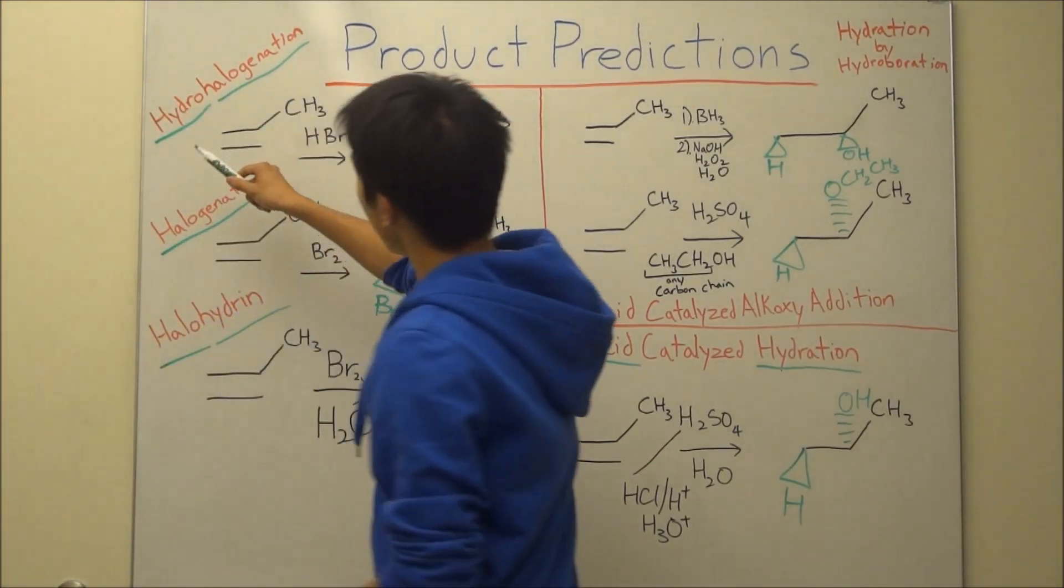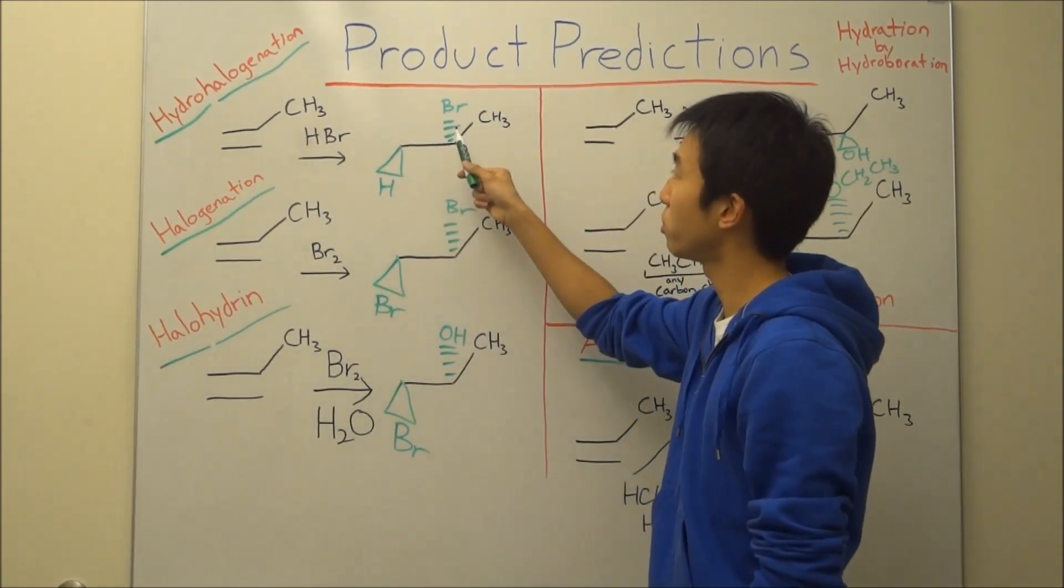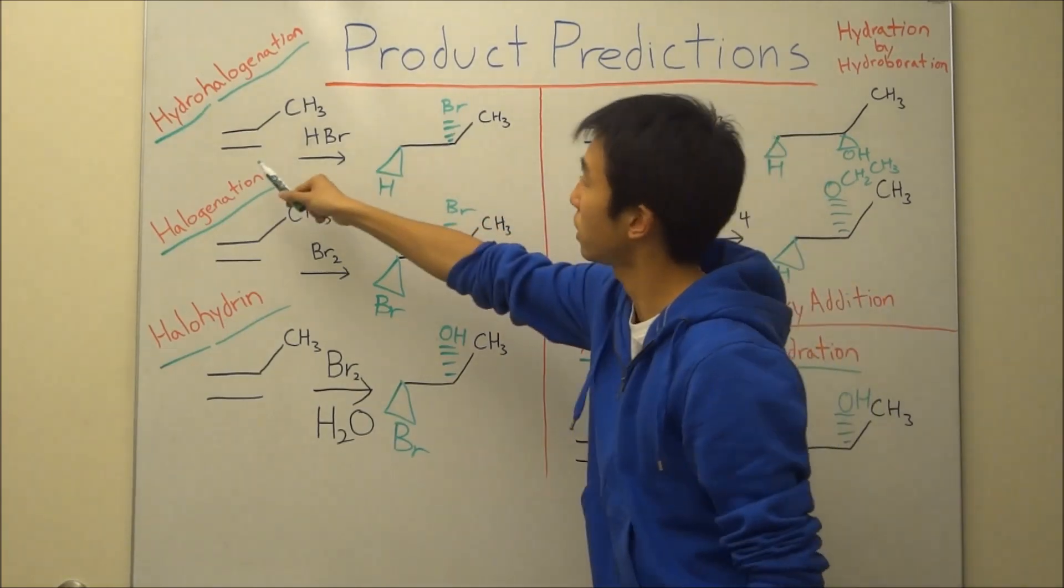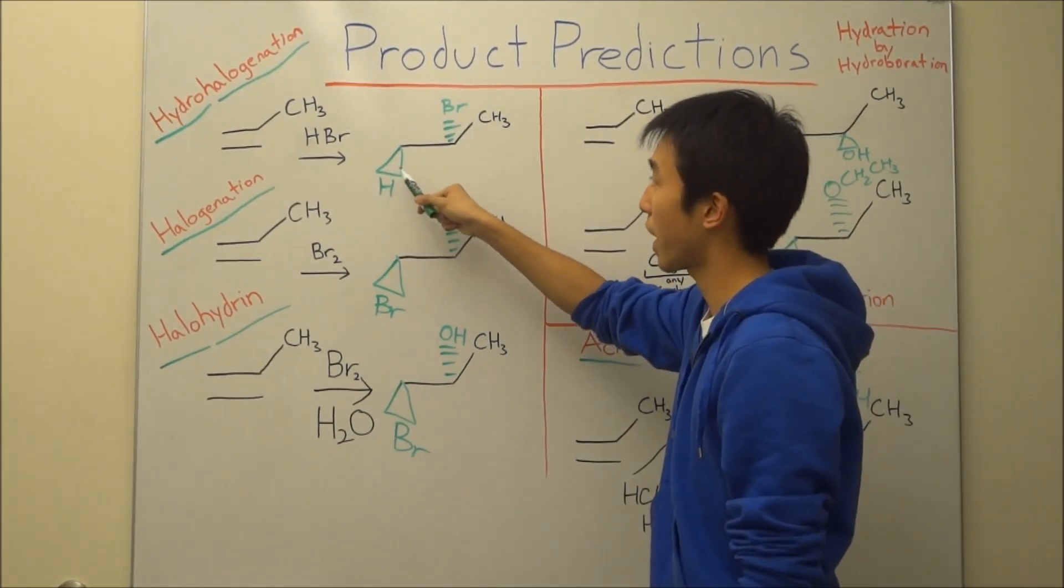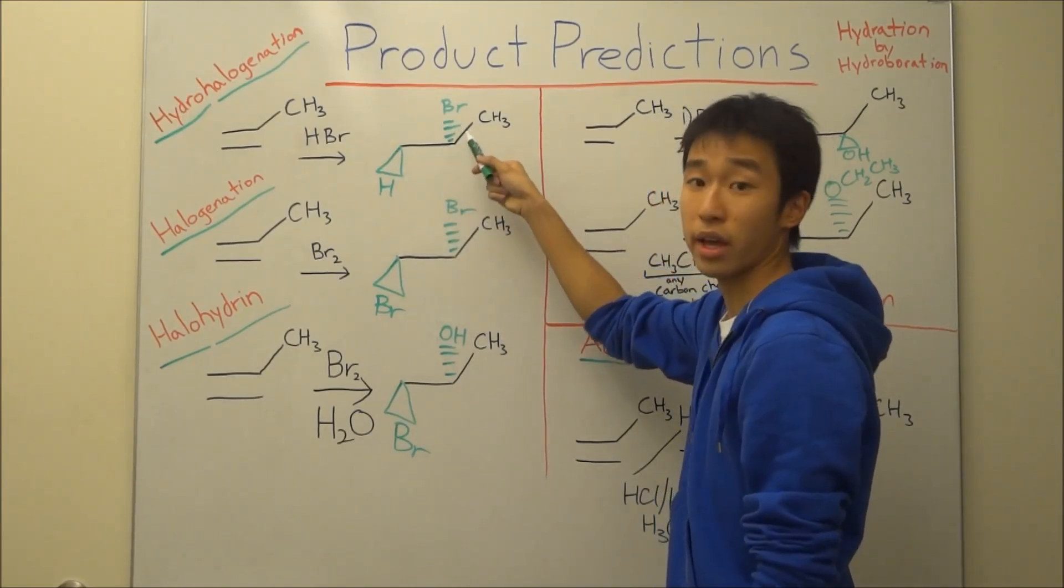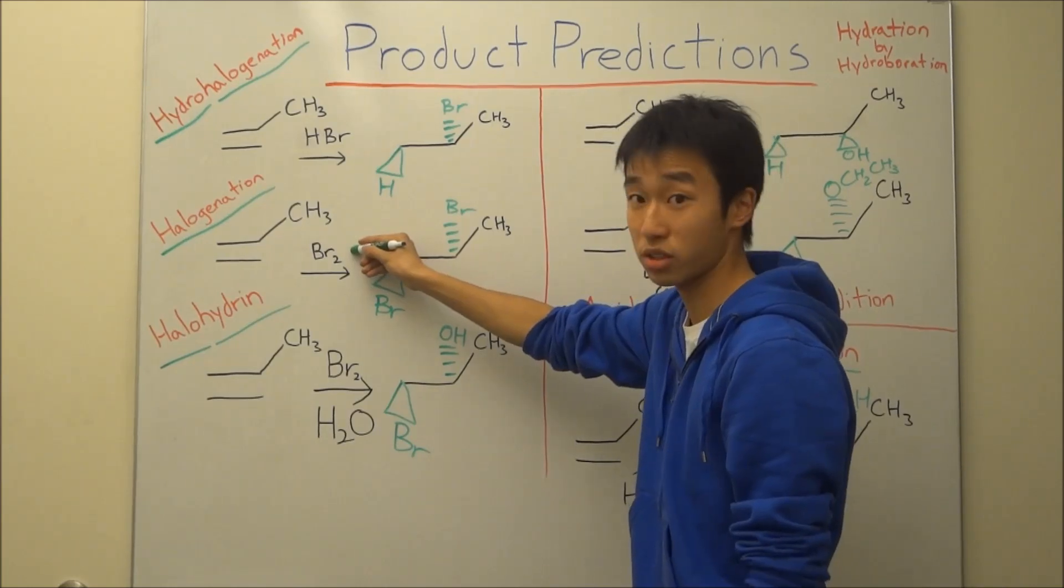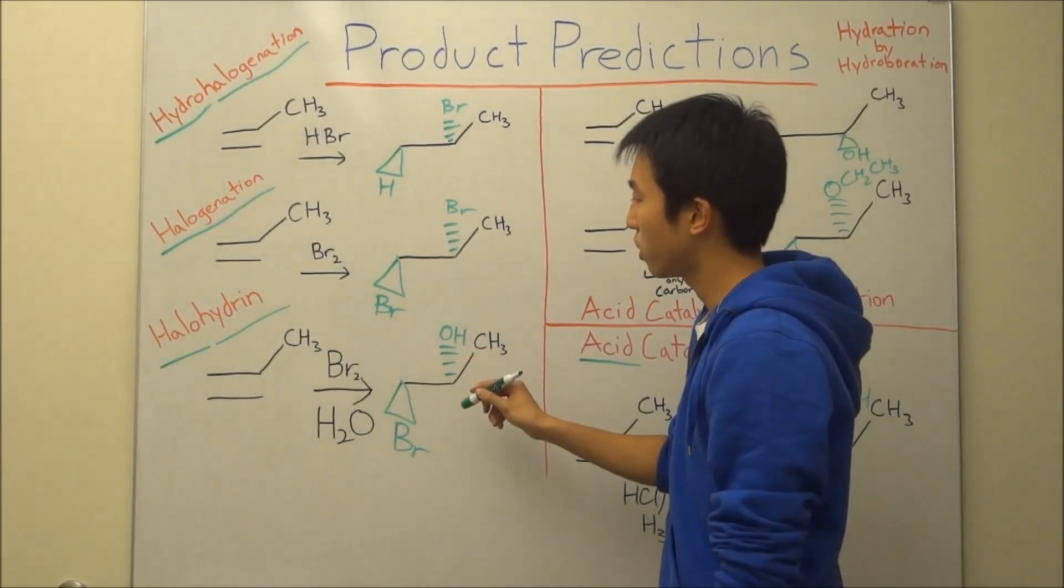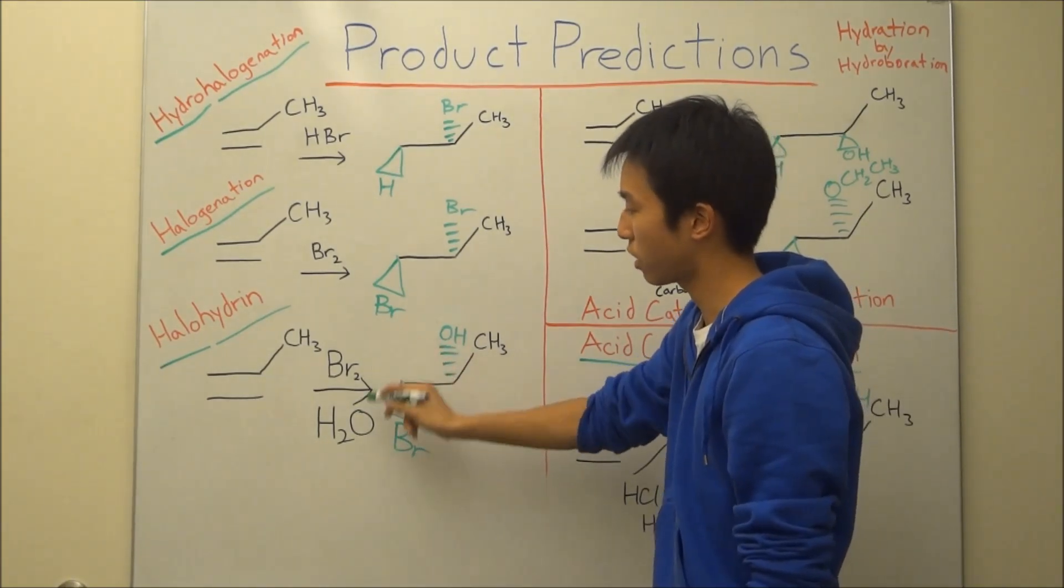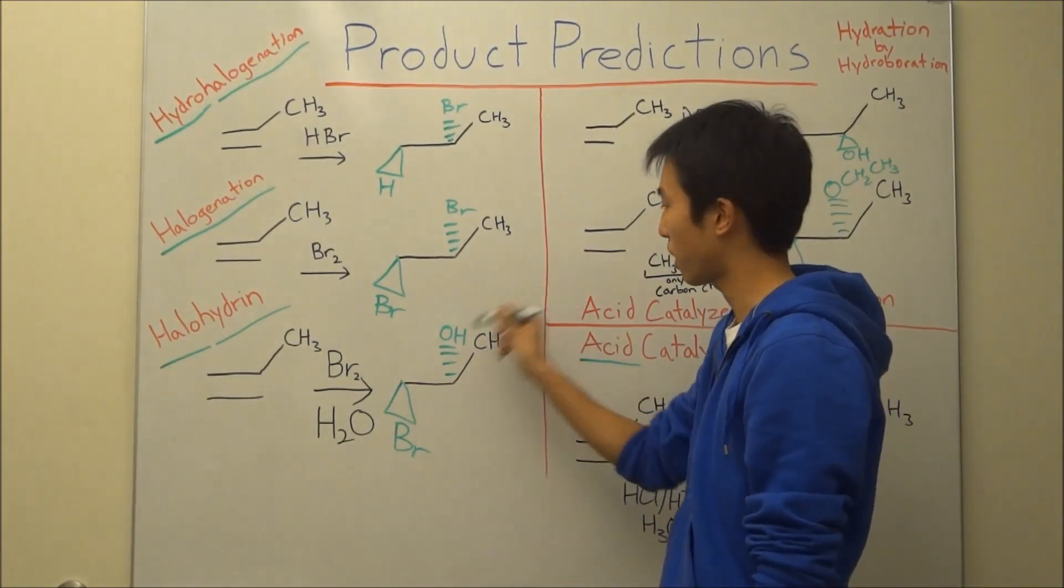So just in review, hydrohalogenation, you're adding a hydrogen on the less substituted side, and bromine on the other side of the alkene. But it has to be opposite sides. So this can technically be a dash, and this would be a wedge in that case. Halogenation, your reactant is just halogens, and you add them on opposite sides. Halohydrin, your reactants are your halogens and your water molecule, and you have your bromine and alcohol on opposite sides.